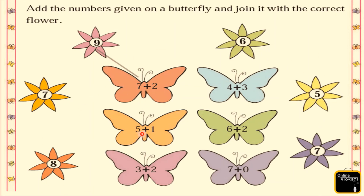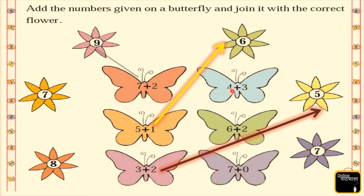Next, 5 plus 1 is equal to 6. Where is number 6? Yes, here it is — so we join these. 5 plus 1 is equal to 6. Next question, 3 plus 2 — what is 3 plus 2? Yes, 3 plus 2 is equal to 5. Where is number 5? Here it is, so we match them together. Next, 4 plus 3 is 7 — where is number 7? Yes, here it is. We have 7 in two places; you can join any one of them.